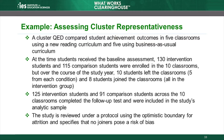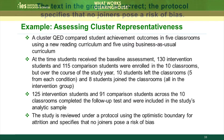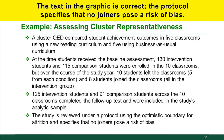Let's walk through an example of how to assess cluster representativeness. A cluster QED compared student achievement outcomes in five classrooms using a new reading curriculum and five using business-as-usual curriculum. At the time students received the baseline assessment, 130 intervention group students and 115 comparison group students were enrolled in the ten classrooms. Over the course of the study year, ten students left the classrooms — five from each condition — and eight students joined the classrooms, all in the intervention group.